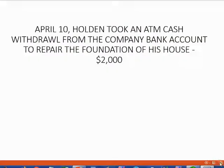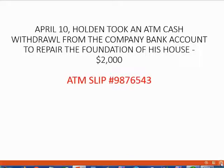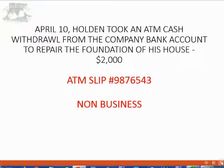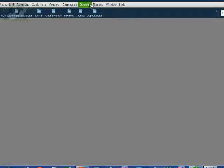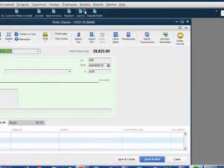What about this transaction? On April 10, Holden took an ATM cash withdrawal from the company bank account to repair the foundation of his house — $2,000. The ATM slip had the number 9876543 as the unique transaction identification number. This is obviously not for business and therefore we will again use the withdrawals account. Let's record this one in the Write a Checks window. From the main menu, click Banking, Write a Check.